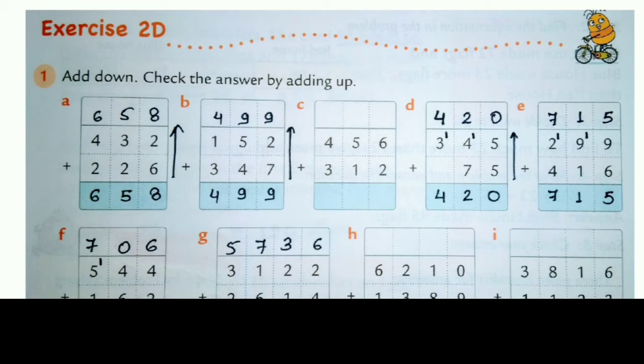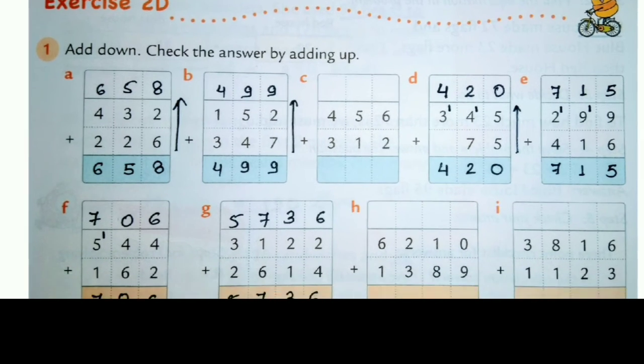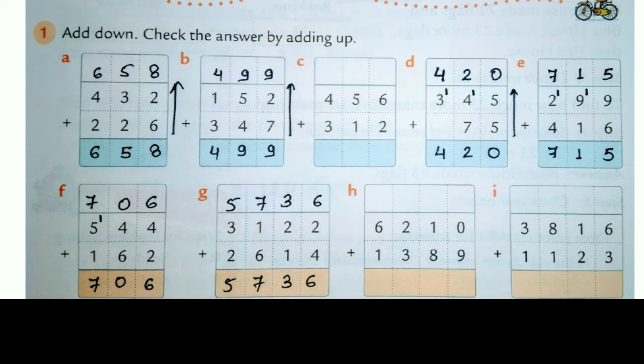Now we start exercise 2D. In this first question add down, check the answer by adding up. See, first question I have done. 6 plus 2 is 8, 3 plus 2 is 5, 4 plus 2 is 6. I have done this method. Now I have to check by adding up. The same thing we will do. 6 plus 2 is 8, 3 plus 2 is 5, and 4 plus 2 is 6.